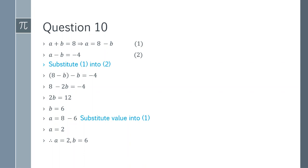Substituting b = 6 into equation 1: a = 8 - 6 = 2. Therefore a = 2 and b = 6. These are the values for a and b, completing question 10 and the entire exercise 4a. Thank you guys, have a good day.